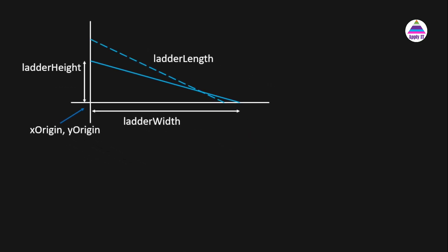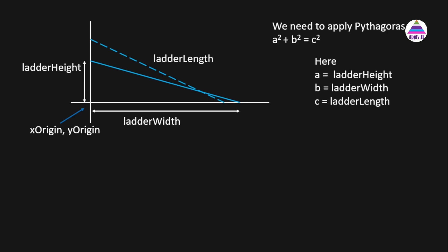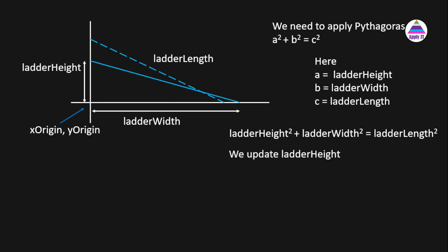We need to apply the Pythagorean equation: a² + b² = c². Here 'a' is the ladder height, 'b' is the ladder width, and 'c' is the ladder length. So the equation becomes: ladder_height² + ladder_width² = ladder_length². When the ladder is sliding, the ladder height decrements, and accordingly ladder_width² = ladder_length² - ladder_height².